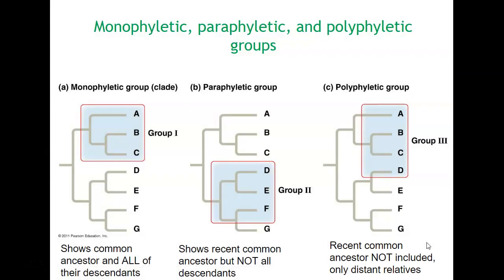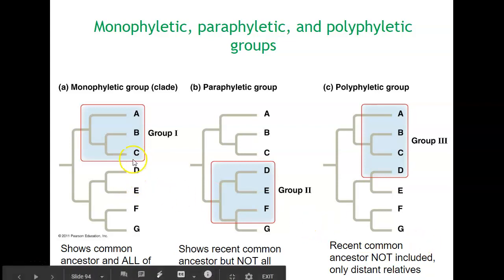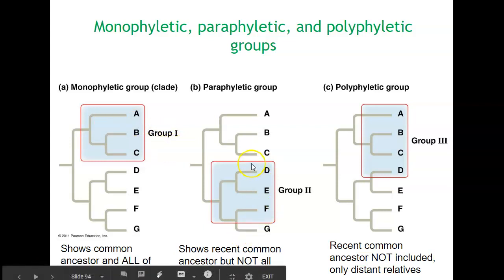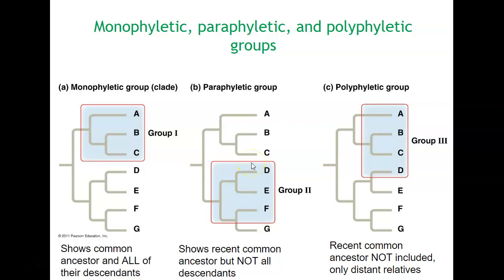Monophyletic shows the common ancestors of all of their descendants. In part B, it shows recent common ancestor but not all descendants because it's leaving out G, so that's a paraphyletic group. Poly means you're including a recent common ancestor not included, like D is not part of the ancestry of ABC. Most of the time we're going to look at something like A, which is a clade.